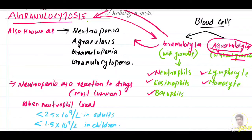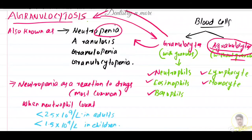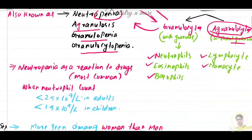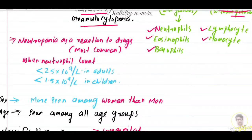That is what agranulocytosis is all about. It is also known as neutropenia — 'penia' means less than normal — and also as granulopenia or granulocytopenia. The most common condition is neutropenia, which is why it is commonly known as neutropenia. Mostly it is a reaction to drugs.